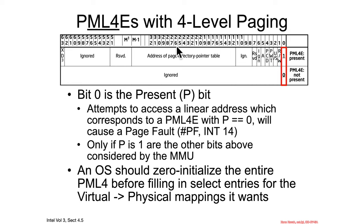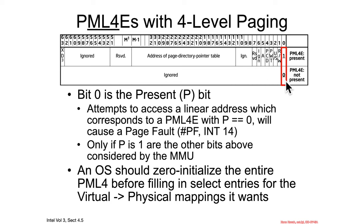In general, you would expect that in the page map level 4, an operating system would basically just zero-initialize everything, and then only fill in the entries that correspond to virtual-to-physical mappings that it wants to actually make. Everything else should be default-invalid and cause some sort of error when someone tries to access it.